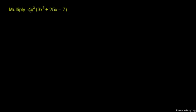The problem is to multiply negative 4x squared with the expression in parentheses: 3x squared plus 25x minus 7.